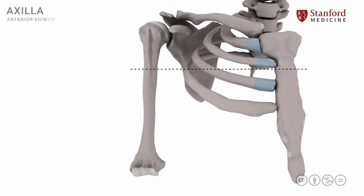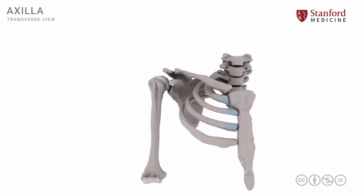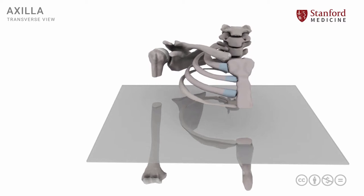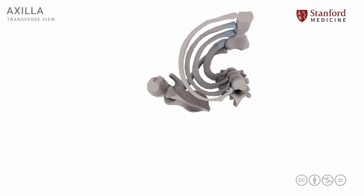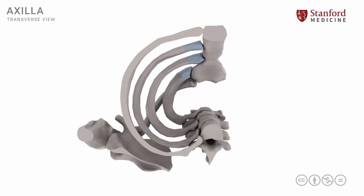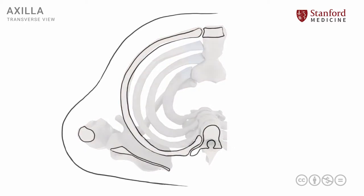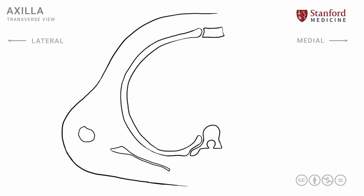Here we have our 3D model, now reduced in size, and a plane comes and cuts it. We lift up the superior part and rotate it, and we're now looking at it from an inferior vantage point. Note that the rib is seen in its entire length, and we know that ribs have an oblique angulation. Therefore, strictly speaking, this is not a transverse section — it is actually an oblique section. But for our purpose, we'll continue to call it a transverse section just so that it is easy to communicate.